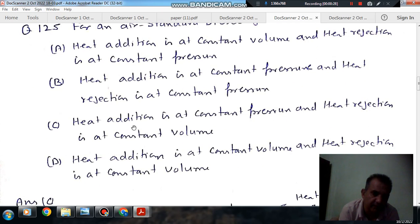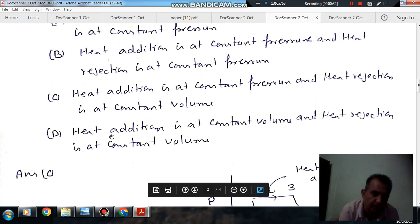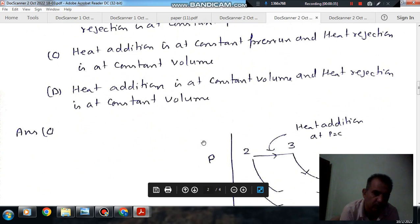Option C: Heat addition is at constant pressure and heat rejection is at constant volume. Option D: Heat addition is at constant volume and heat rejection is at constant volume.